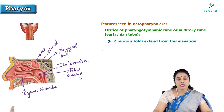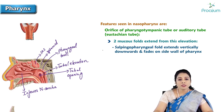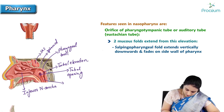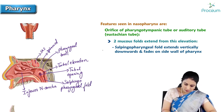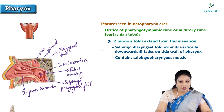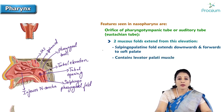Tubal mucous folds extend from this elevation. The next important feature is the salpingopharyngeal fold, which extends vertically downwards and fades into the wall of the pharynx. This salpingopharyngeal fold contains the salpingopharyngeus muscle — 'salpingo' means tube — so it is a muscle attached to the auditory tube. The salpingopalatine fold extends downwards and forwards into the soft palate and contains the levator palatini muscle.